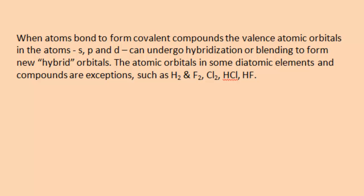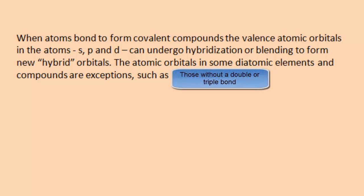In this video, I'll take a closer look at covalent bonds. When atoms bond to form covalent compounds, the valence atomic orbitals in the atoms — the s, p, and d — can undergo hybridization or blending to form new hybrid orbitals. The atomic orbitals in diatomic elements and small diatomic compounds that do not have a double or triple bond are exceptions to the hybridization process.